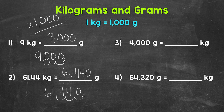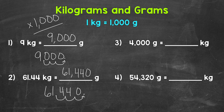To recap: when we go from kilograms to grams, we multiply by one thousand, and we can do that by moving the decimal three times to the right. Let's move on to number three, where we have four thousand grams equals how many kilograms. Each group of one thousand grams equals a kilogram, so we need to think: how many groups of one thousand are in four thousand? That's four thousand divided by one thousand, which equals four. Four thousand grams equals four kilograms. When we go from grams to kilograms, we divide by one thousand.